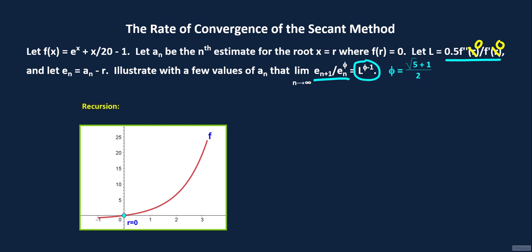The recursion for the secant method states that a sub n plus 1 equals a sub n minus f of a sub n times the quantity a sub n minus a sub n minus 1 divided by the quantity f of a sub n minus f of a sub n minus 1. We will use the software Mathematica for this exercise.